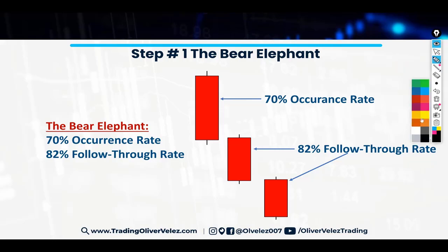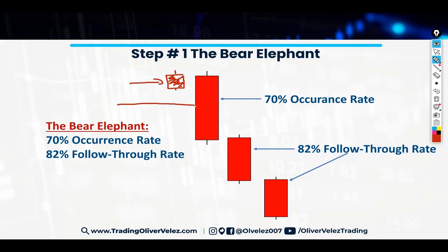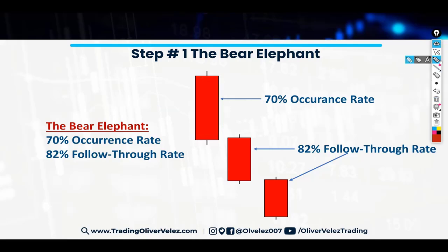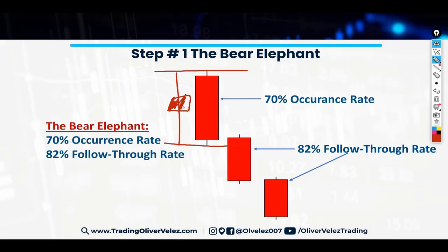If I were to draw a regular bar, you'd have a regular bar, and then the elephant bar is next. The elephant bar is taller and longer, and the vast majority of the bar from high to low is the color itself. You might have a bar that's the same length from high to low, but the body is small — and that's not an elephant bar, despite its length being equal. A true elephant bar has the vast majority of the bar from high to low as the body. That's why it's an elephant bar.